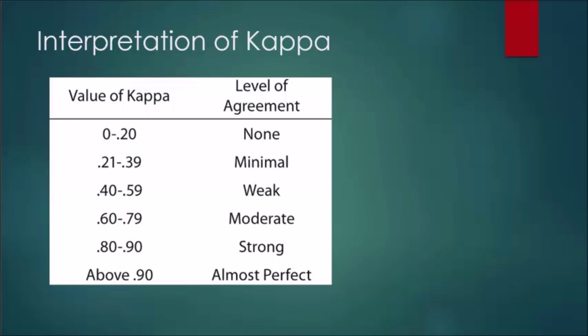Moving on to intra-rater reliability — same process: Reliability Analysis, get rid of Rater 2, and put in Rater 1 for Trial 2. The statistics stay the same. The intra-rater reliability is lower than the inter-rater reliability, for the same reasons mentioned for the Kappa. But overall it is still significant. The level of agreement is now between poor and moderate, leaning towards the poor side, and definitely not good enough for a clinical measure according to the second author.